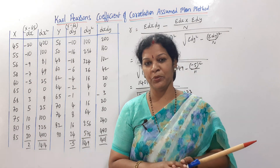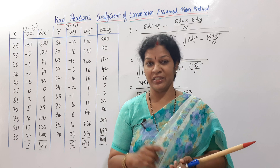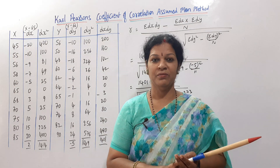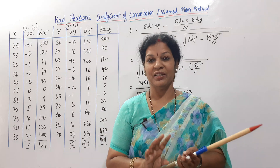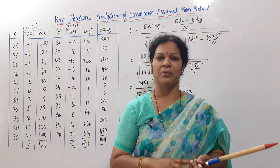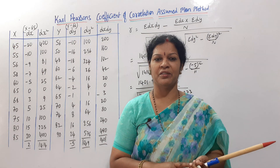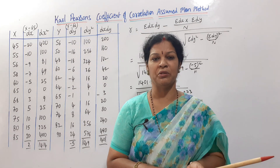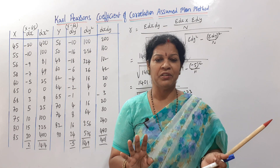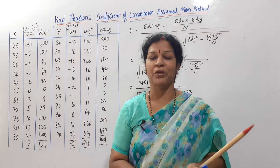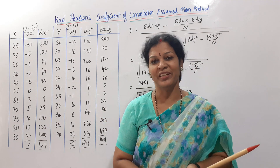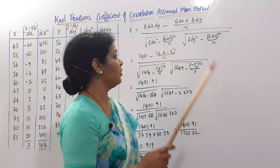From the data we have to calculate dx, then dx-squared. Similarly for y: dy and dy-squared. After that, we calculate dx into dy. The columns are the same as in the standard deviation approach. It's a big formula, but logical and easy once you see it.